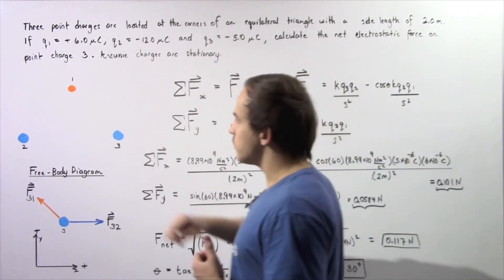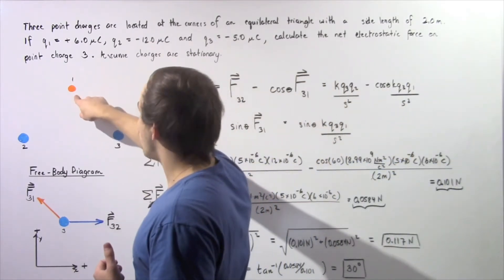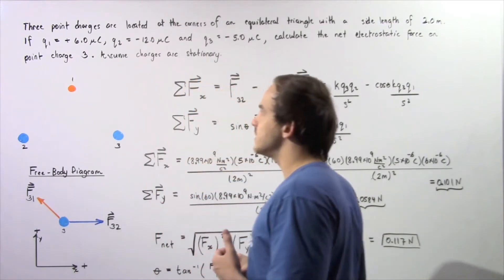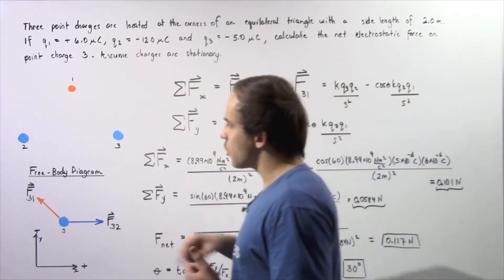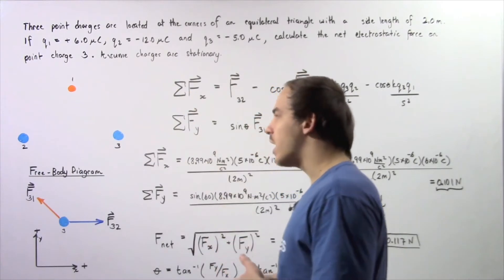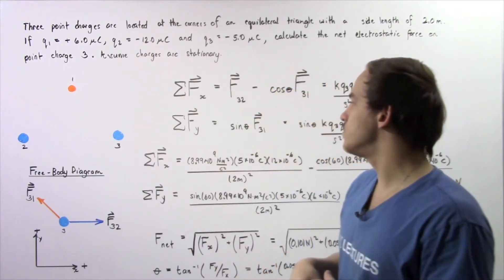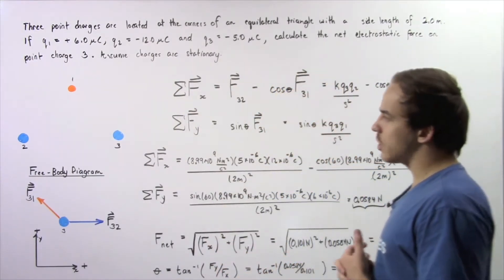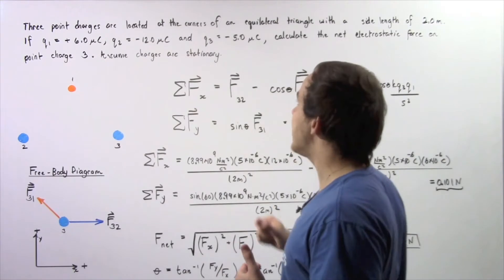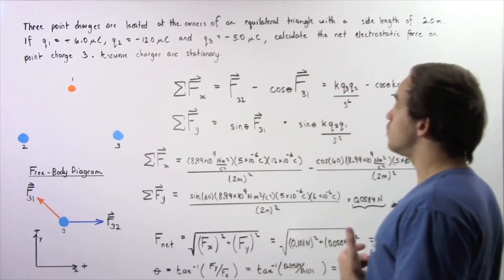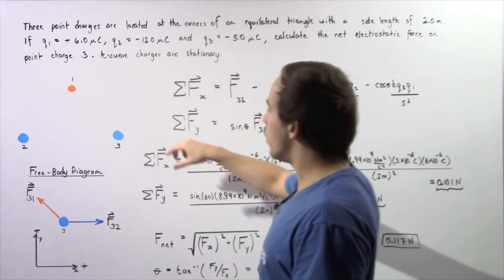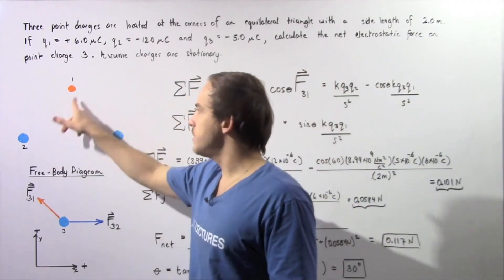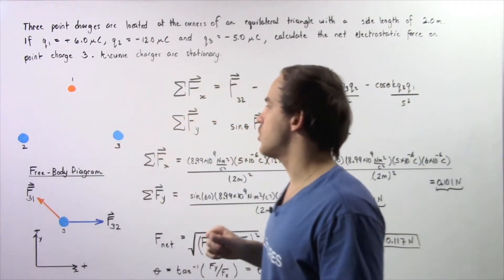If the charge of point charge one is equal to positive six microcoulombs, the charge of point charge two is negative 12 microcoulombs, and the charge of point charge three is negative five microcoulombs, calculate the net electrostatic force acting on point charge three as a result of these two point charges.